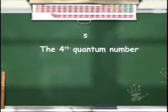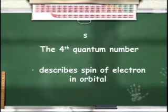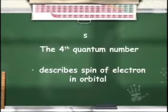The fourth quantum number, S, describes the motion of an electron within an orbital. An orbital can hold a maximum of two electrons provided they have opposite spins—this quantum number tells us if an electron within an orbital is spinning clockwise or counterclockwise. In this course, we're most concerned with N, the principal quantum number representing the main energy level, and L, the quantum number representing the orbital shape or sublevel within the main energy level.